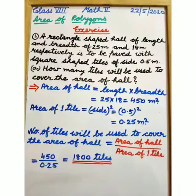A rectangle shaped hall of length and breadth of 25 meter and 18 meter respectively is to be paved with square shaped tiles of side 0.5 meter. Now, the question is how many tiles will be used to cover the area of hall?